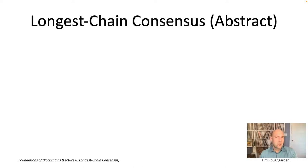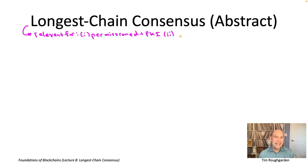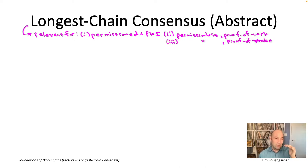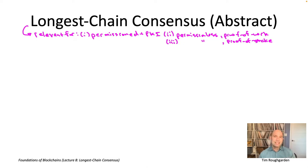I'm going to be addressing both audiences at the same time. The primary focus of this lecture will be on the permissioned plus PKI setting. There will also be forward pointers to two different genres of permissionless consensus protocols: proof of work protocols, which we'll cover in lecture nine, and proof of stake protocols, covered in lecture 12.